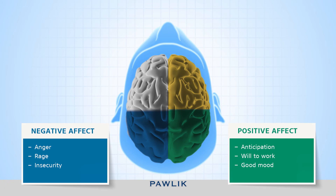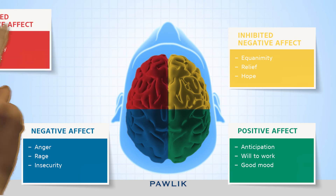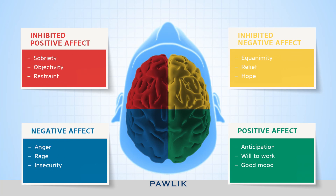Inhibited negative effect manifests itself in emotions such as equanimity, relief, or hope. These activate the managing director and promote our ability to perceive things comprehensively and to form goals. By contrast, the logician enables us to analyze and plan our actions through sobriety, objectivity, or restraint — that is, through what is referred to as the inhibited positive effect.